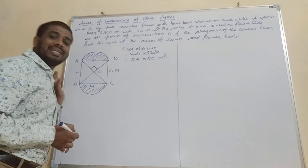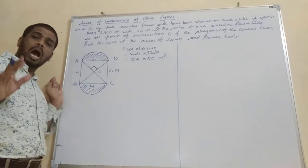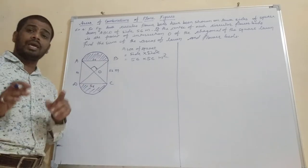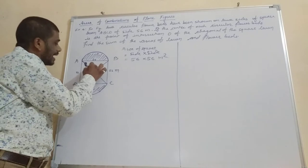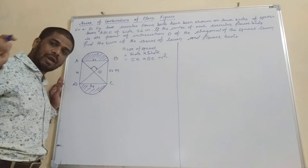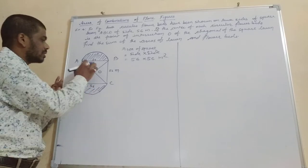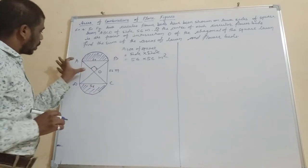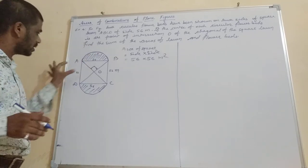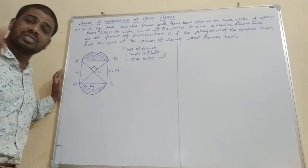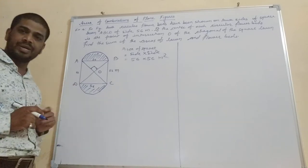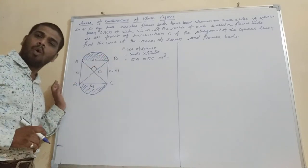The diagonals of a square are perpendicular bisectors. So AC and BD will bisect each other at 90 degrees, by definition. Because the diagonals of a square are perpendicular bisectors, this angle will be 90 degrees. Since AO and OB are perpendicular and the diagonals of a square are equal, AC = BD, so AO = OB.